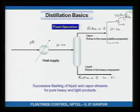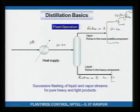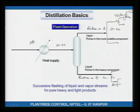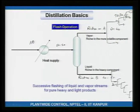Similarly, taking the bottom liquid stream and flashing it again, the remaining liquid will be richer in B — perhaps 30-70. Repeating this enough times, we eventually get something like 99 percent B at the bottom.